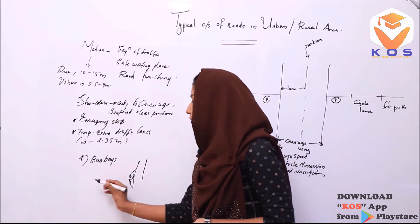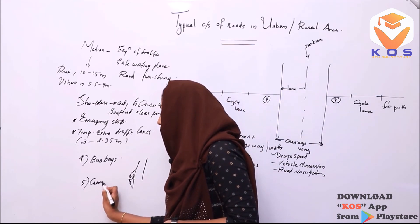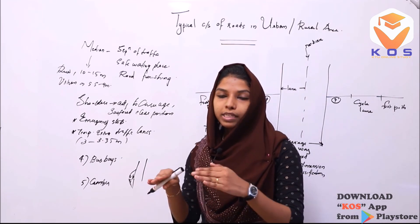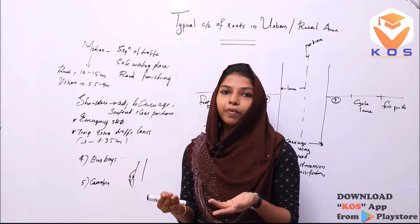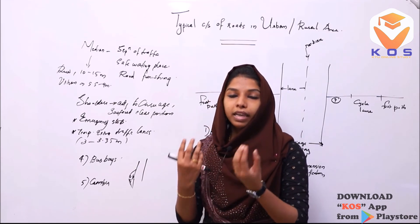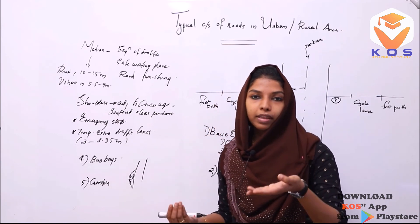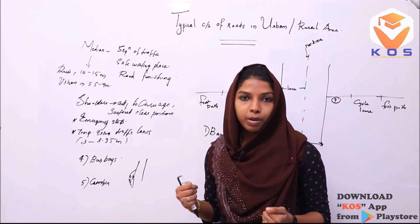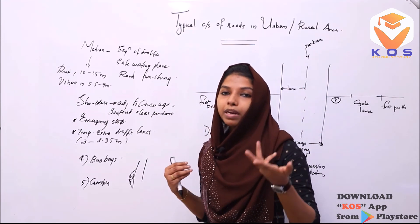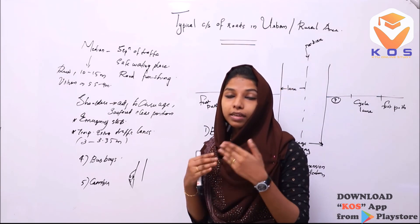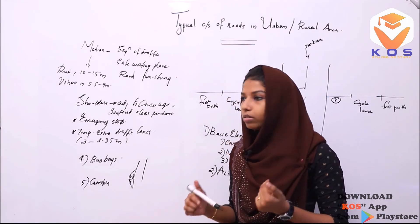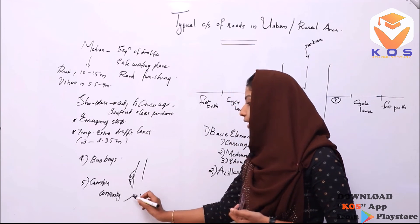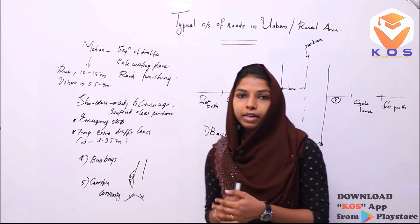The fifth basic element is camber. Camber is a raised portion — it is the convexity provided in the road surface. Camber is mainly provided to facilitate drainage of water from the road surface.